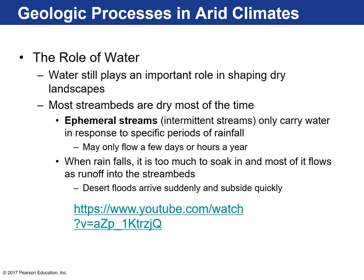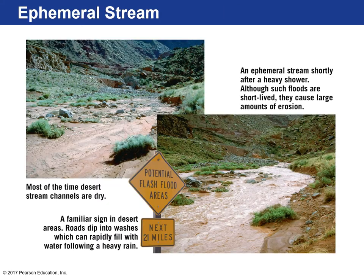When it rains, it's too much to soak into the ground and most flows off as runoff. There's a phenomenon called desert floods that can arrive suddenly, almost like flash floods. Here's an example — this is a dry riverbed, which is what you typically see nine times out of ten in this region. But every once in a while when there is rain, you get a lot of runoff and really quick flash floods in an area like this.